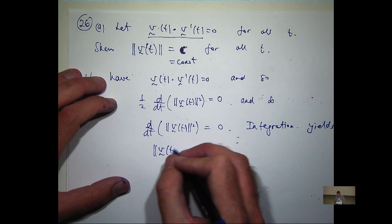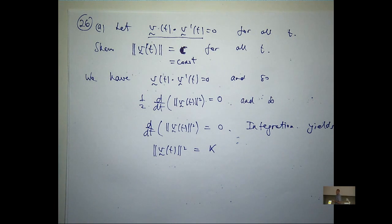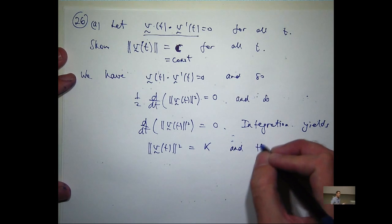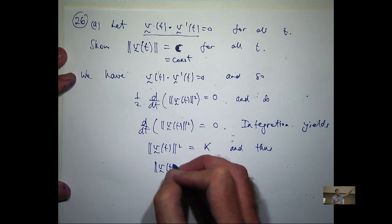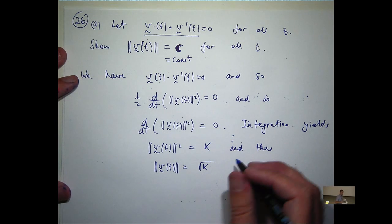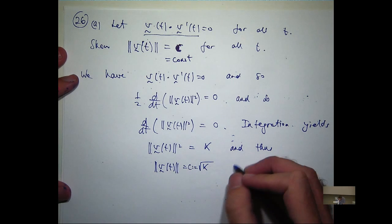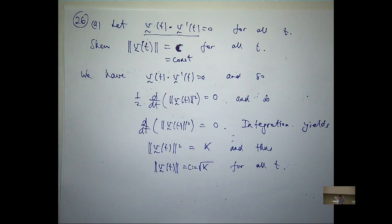So I can get rid of that half and then just integrate both sides. Okay. Say some constant K. So if I want to just look at the speed, well, I'll just take the square root and define that to be a new constant. So, okay. So I'm defining a new constant there. Root K, that's going to be my constant C. So, therefore, the velocity's constant for all T.